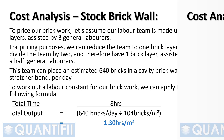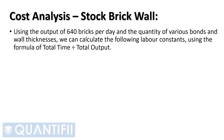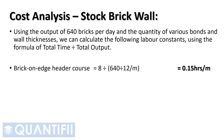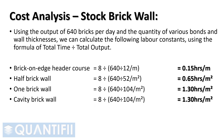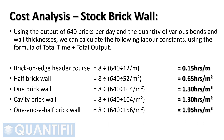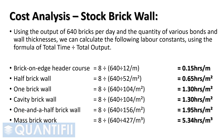Using the output of 640 bricks per day and the quantity of various bonds and wall thicknesses, we can calculate the following labor constants using the formula of total time divided by total output. Brick-on-edge header course: 8 hours per day divided by 640 bricks per day divided by 12 bricks per meter equals 0.15 hours per meter. A half brick wall equals 0.65 hours per square meter. One brick and cavity walls amount to 1.3 hours per square meter. A one and a half brick wall: 1.95 hours per square meter. And finally, mass brickwork takes 5.34 hours per cubic meter.